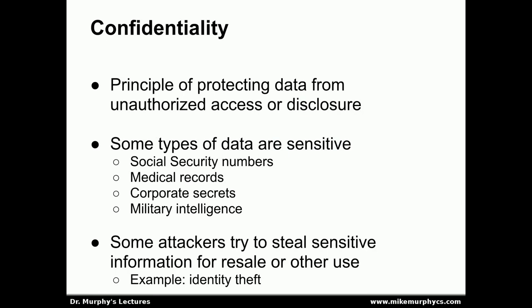Confidentiality is the first principle in the CIA triad — the principle of protecting data from unauthorized access or disclosure. There are types of data used in business, industry, and government that are sensitive. Social security numbers can be used to facilitate identity theft. Medical records are considered confidential to protect a person's privacy regarding their illnesses and medical history. Corporate secrets — such as secrets about upcoming products, products under development, pricing models, or even the profit margins a company makes on a particular product — also require protection.